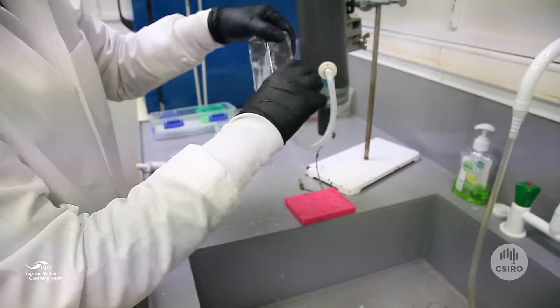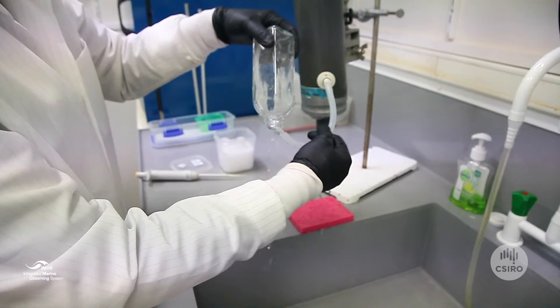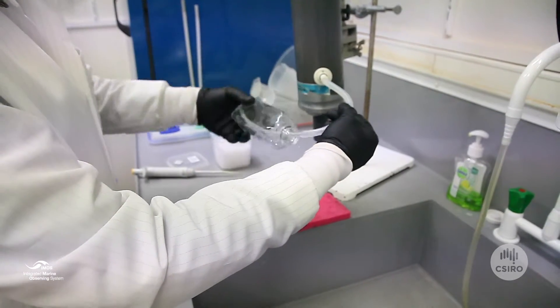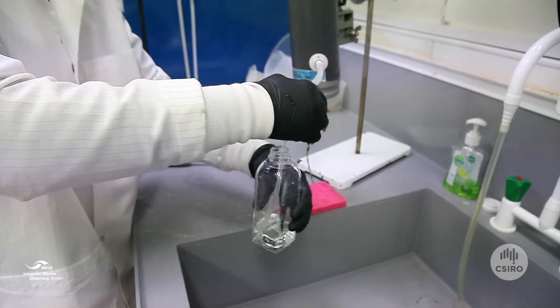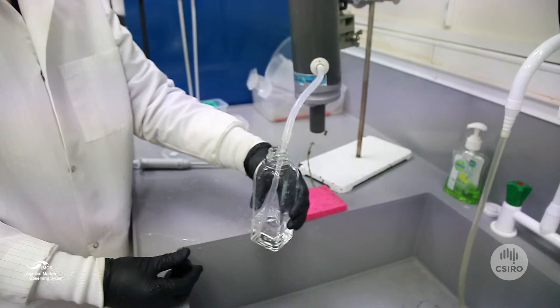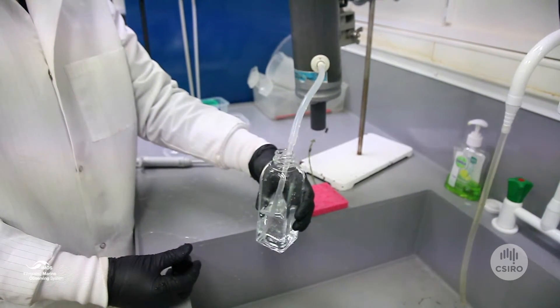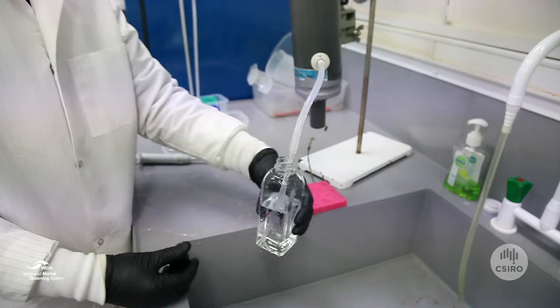Now pinch the tube to stop the flow into the bottle. Turn the bottle back over and start the flow again very carefully so as not to introduce any bubbles into the sample. Allow the bottle to fill and overflow.